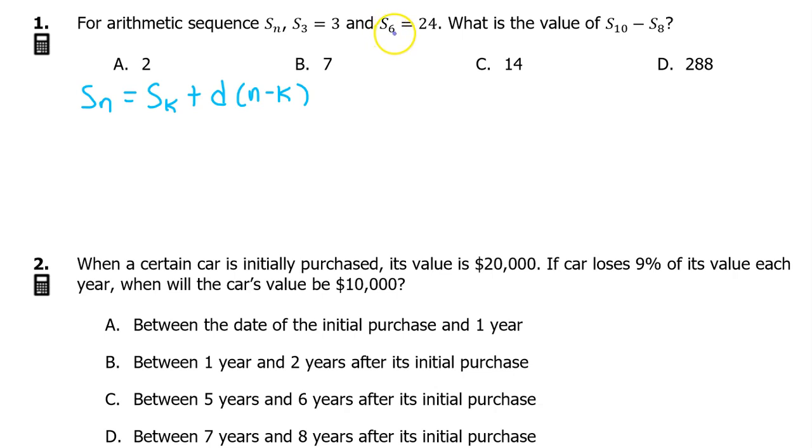When you are given two terms of the sequence, that's enough to write the equation. First you have to find the common difference D by plugging in S_6 for S_n and S_3 for S_k. The n minus k is 6 minus 3, so that's 3. S_6 is 24, and S_3 is 3, and then D times 3 I will write as 3D. Let's subtract 3 from both sides, so we have 21 equals 3D. Then if we divide both sides by 3, we get D equals 7.